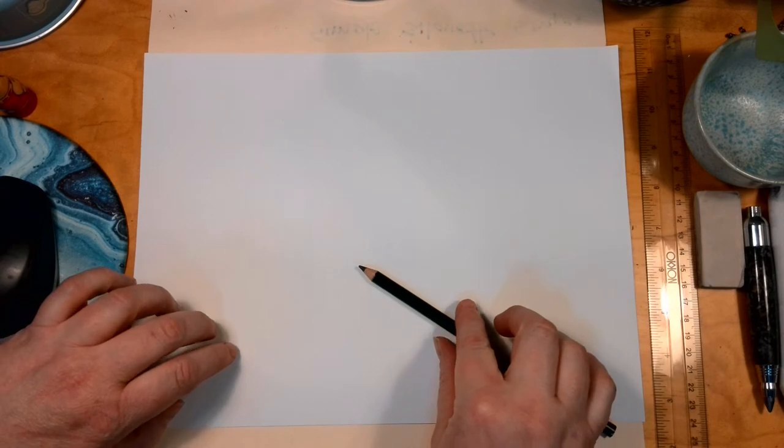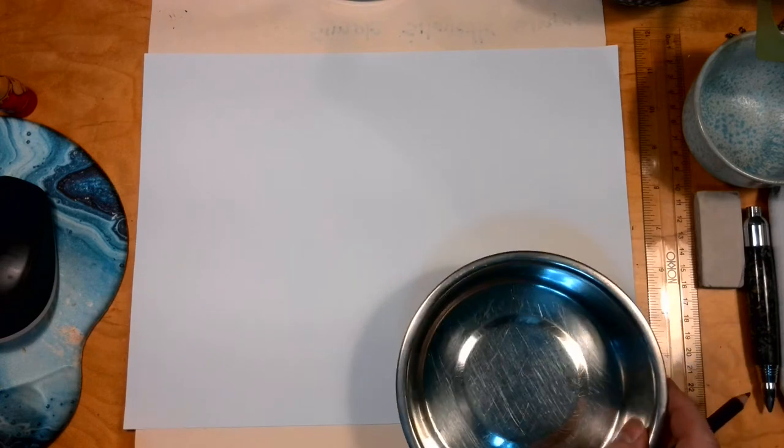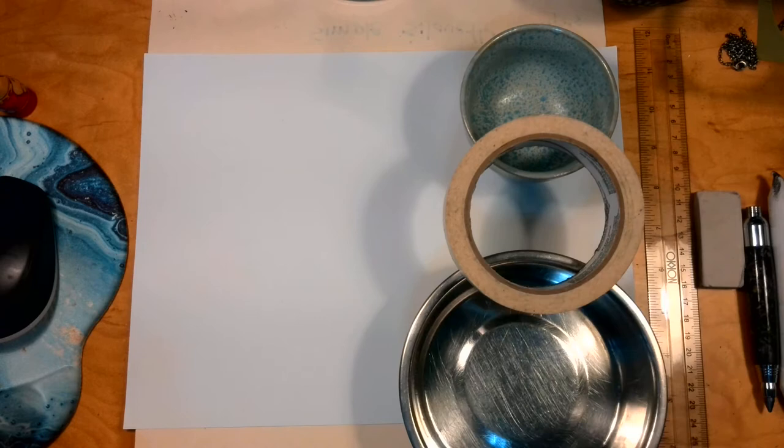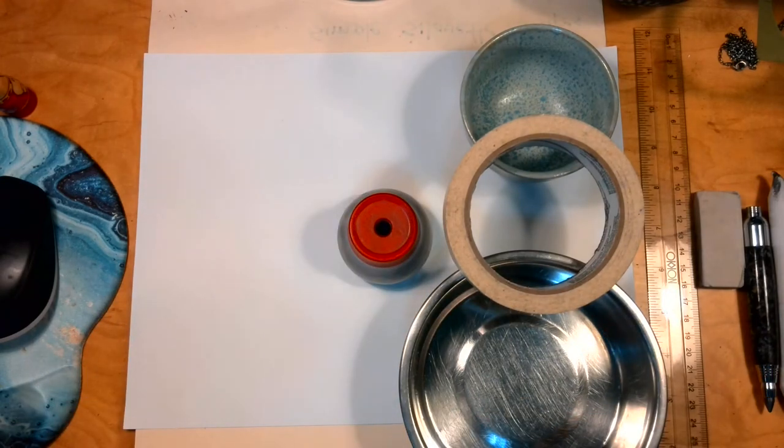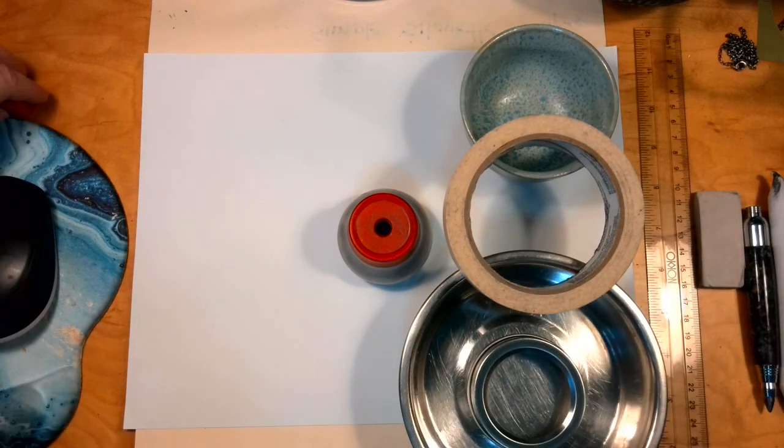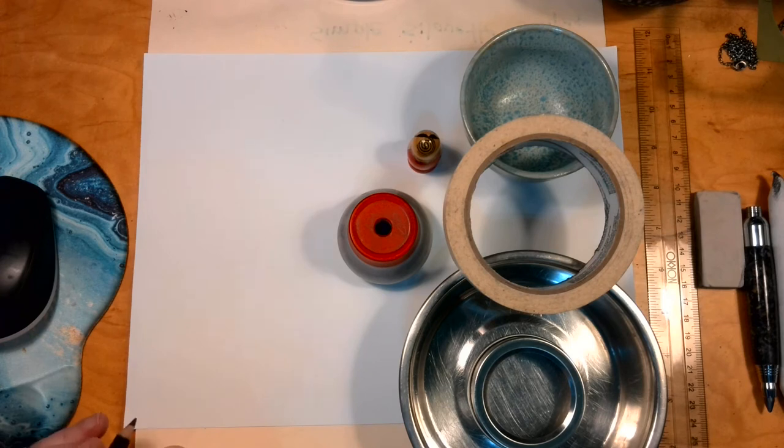So to begin this, I want you to gather up a collection of things to be able to draw circles. And I want you to gather things that are different sizes. So some larger, some smaller, some sort of medium. I would say five or six would be enough to be able to do this if you have enough different sizes.